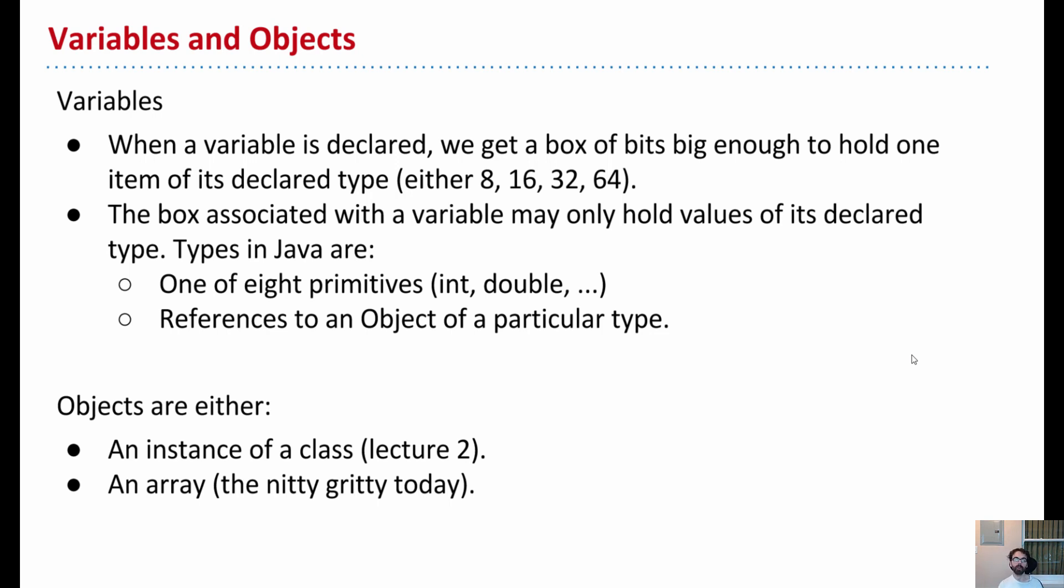Those boxes could only ever hold something of their particular type. So if I say double x, I can't later assign an integer, as we've seen. So what is the type? Of course, in Java, we have those primitive types. There's the eight primitive types, short, long, double, so forth.